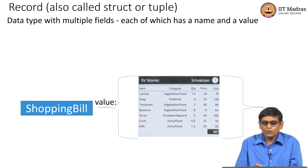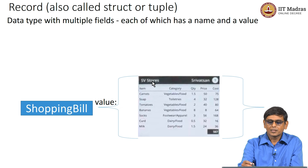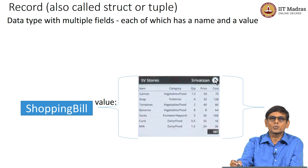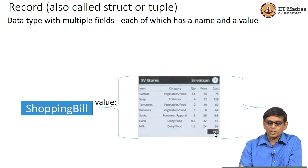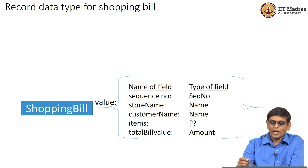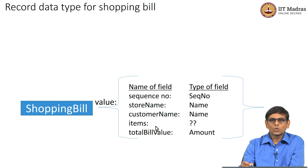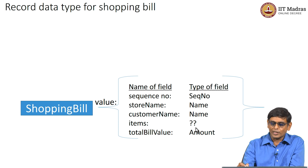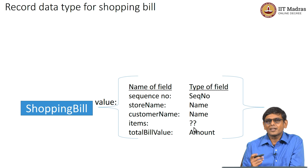How do we do the record for the shopping bill? If you look at a shopping bill, you have the name of the shop, the name of the customer, a sequence number, and a total amount. Besides that you also have a list of items. The complication comes because of this list of items — the name, the sequence number, and the amount I can capture, but I do not know how many items will be in this list. So the items field looks like it should be a list.